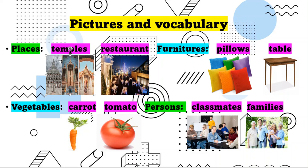Next, restaurant. What is a restaurant? A restaurant is a place where you eat your dinner, breakfast, and lunch. A restaurant has staff who serve you food. It has a menu and a good ambience.